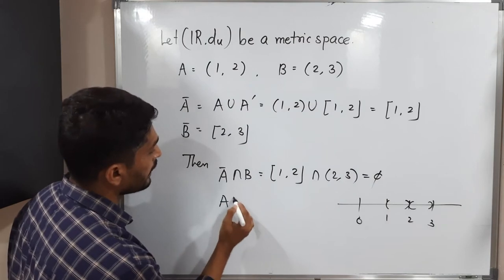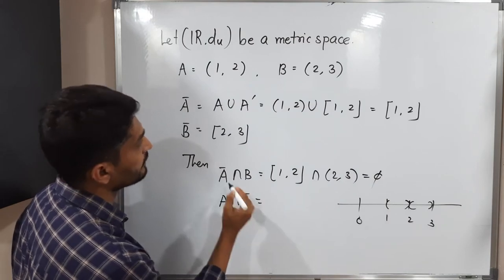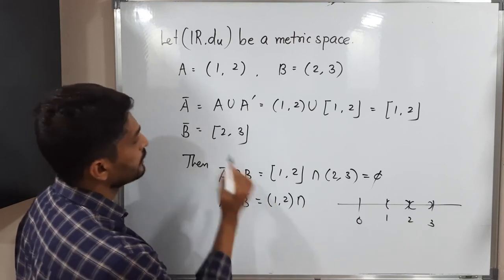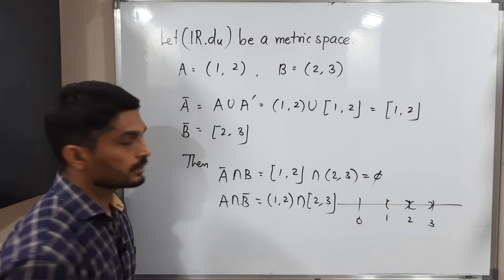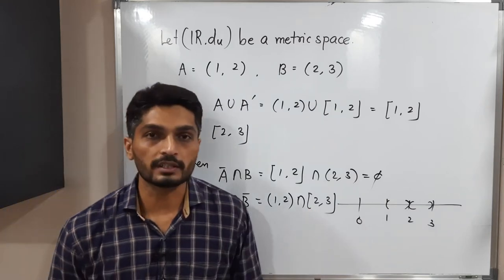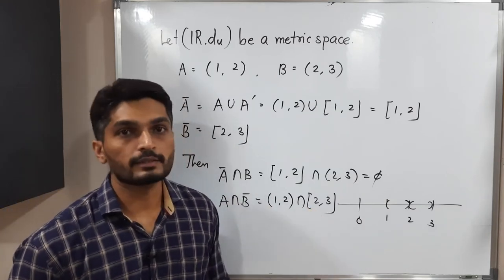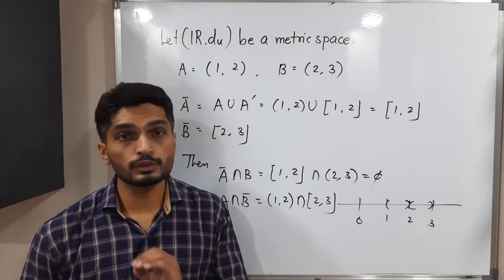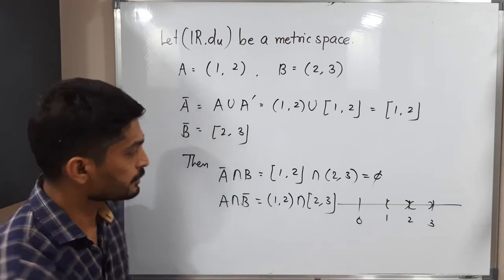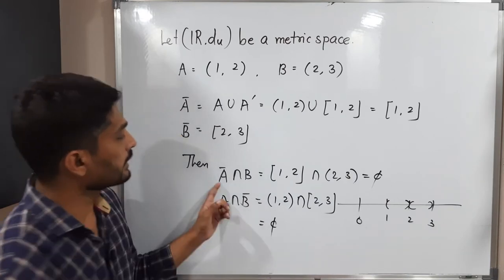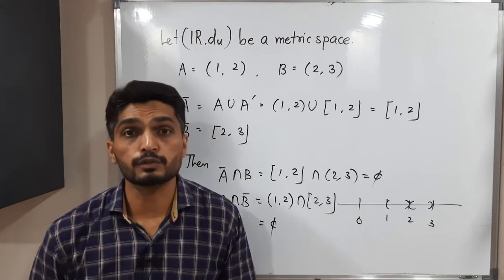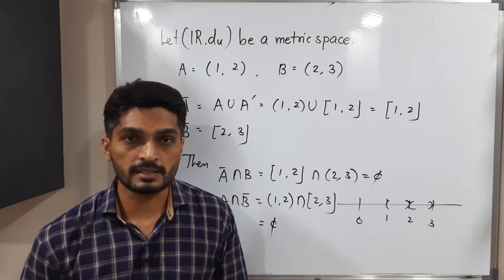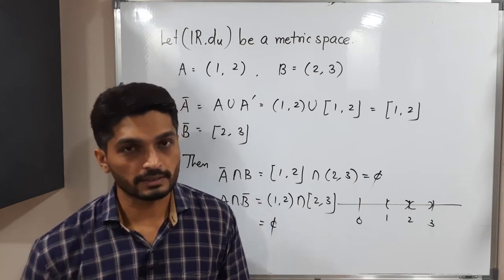Now check A intersection B-bar. A is the open interval (1, 2) and B-bar is the closed interval [2, 3]. The closed interval contains point 2, but the open interval does not contain point 2. So again 2 is not common, and the intersection is phi. So A-bar intersection B equals phi and A intersection B-bar equals phi — both conditions are satisfied, and we can declare yes, A and B are separated sets.